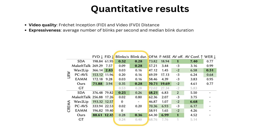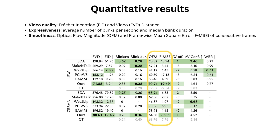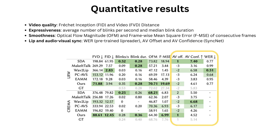For expressiveness, we used average number of blinks per second and median blink duration. For smoothness, we introduced two new metrics: mean optical flow magnitude and frame-wise mean square error. Finally, to evaluate lip and audiovisual sync, we used word error rate using a pre-trained lip reader, and AV offset and AV confidence using SyncNet. Diffused Heads achieves the best or second best results on the majority of the metrics.